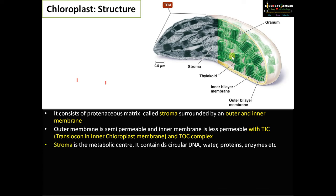The stroma is a metabolic center. It contains double-stranded circular DNA, water, proteins, enzymes, lipids, etc. That is why this organelle is called semi-autonomous, as it has its own DNA. Still, the majority of proteins are coded by nuclear DNA.